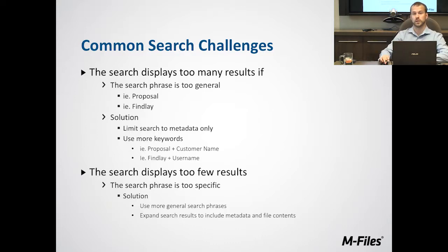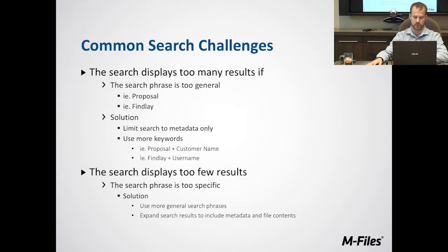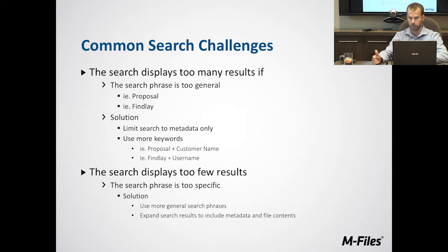If you're showing way too few results, that's because you're being way too specific. So bring down your search criteria a little bit and be less specific. The other option is to also search in the file contents again — metadata and file contents — which will help expand the amount of results you get and hopefully find what you're looking for.